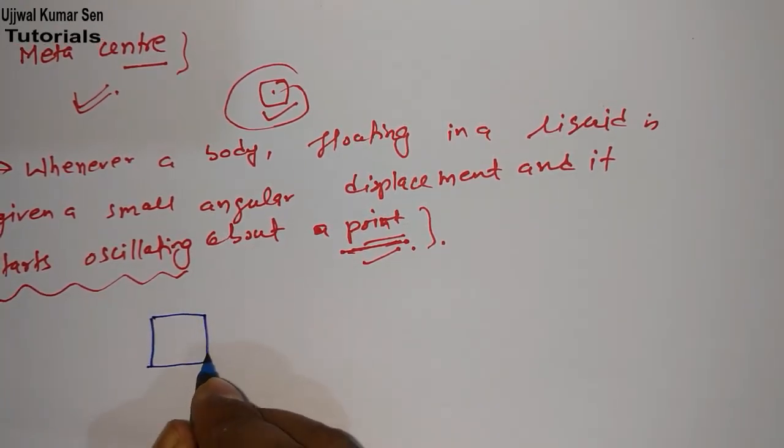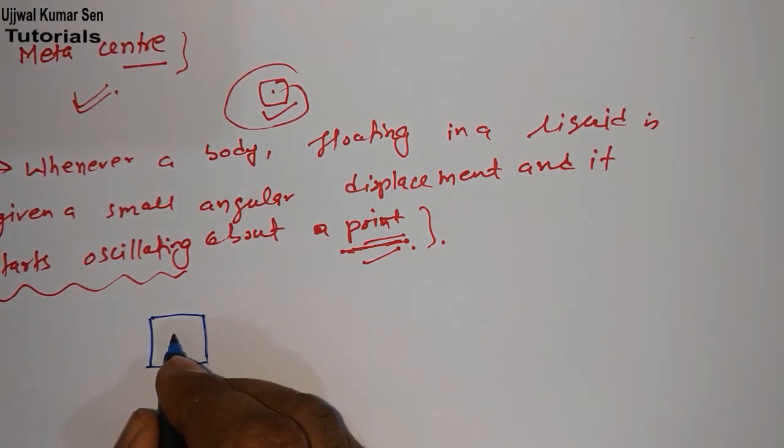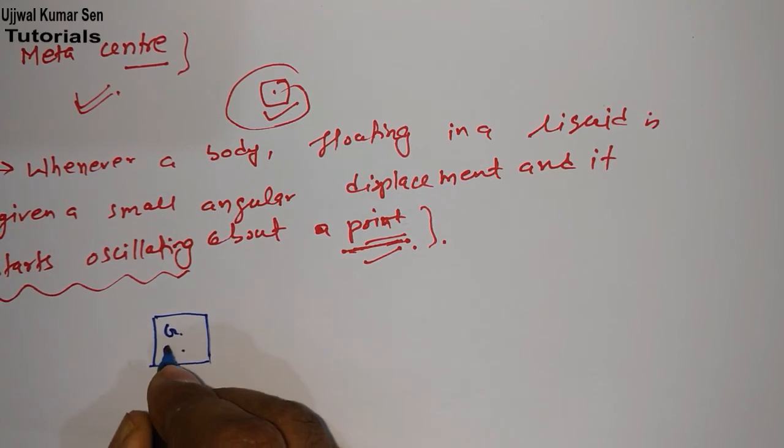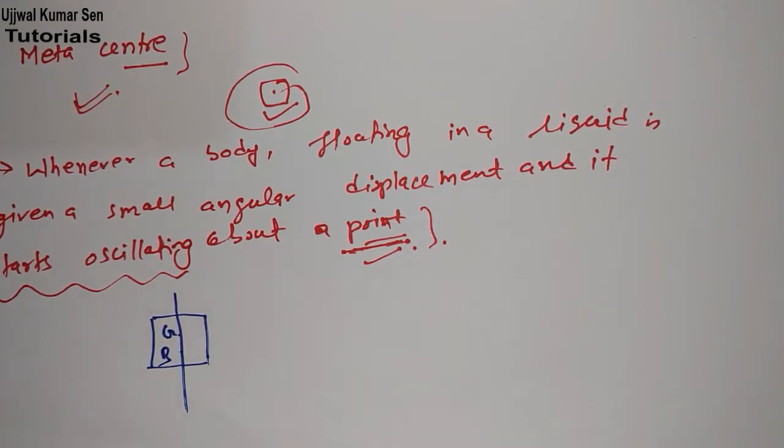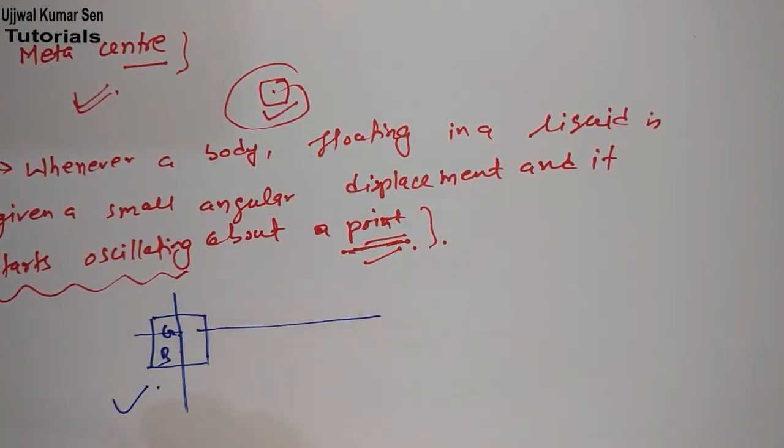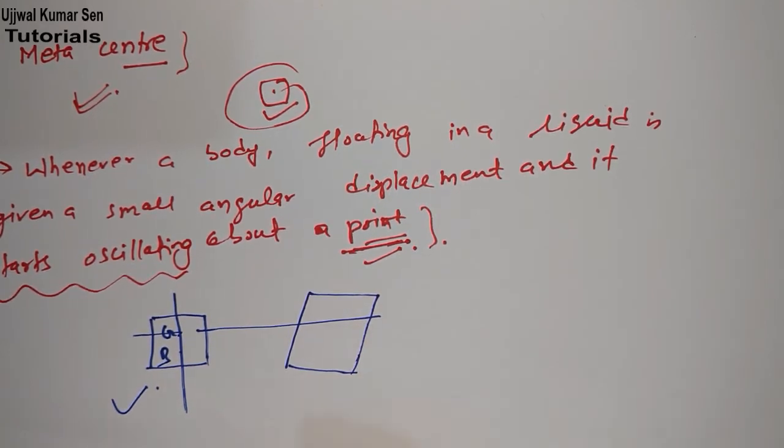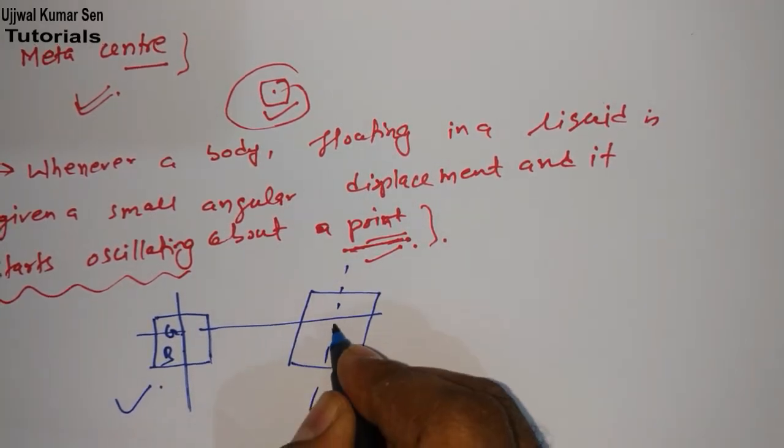Let's get started with an example. Suppose we have a rectangle. In this rectangle we have two points: one is center of gravity, the other one is center of buoyancy. This is a normal condition. But whenever there is angular displacement, what will happen?